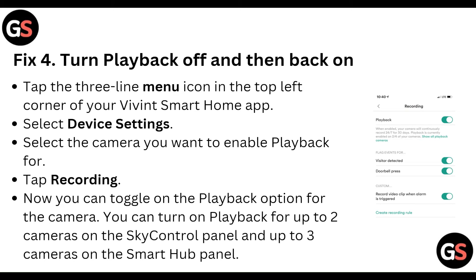Turn playback off, then back on. Tap the menu icon in the top left corner of your Variant Smart Home app and select Device Settings. Select the camera you want to enable playback for and tap Recording. You can toggle on the playback option for the camera. You can turn on playback for up to two cameras on the Sky Control panel and up to three cameras on the Smart App panel.